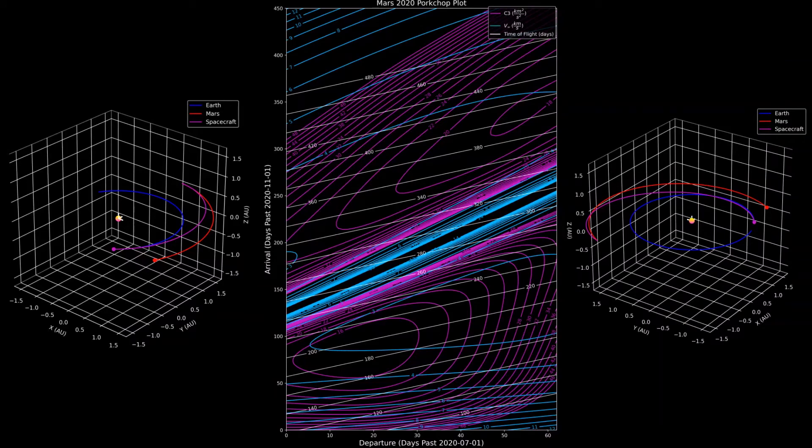This is another version of a pork chop plot which separates those two burns. In this plot, the pink lines represent outgoing C3 from Earth, where C3 is the excess velocity above escape velocity from Earth orbit and that value squared, which gives it units of kilometers squared per second squared. They do this because when you square velocity, that is proportional to kinetic energy. The blue lines represent how much excess velocity the spacecraft has at Mars arrival, which is how much delta V you need in order to capture in Mars orbit.